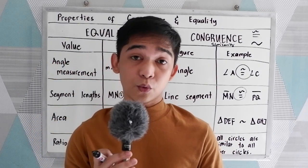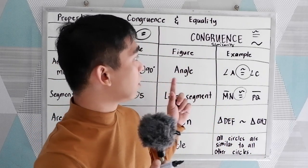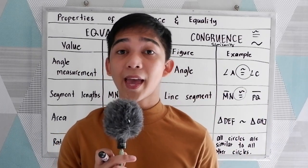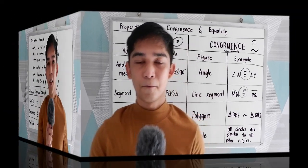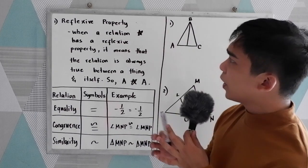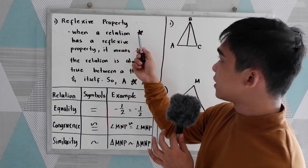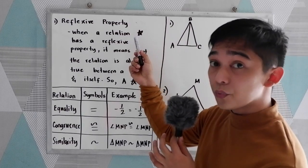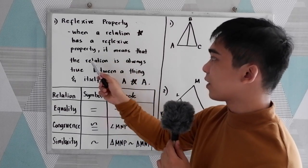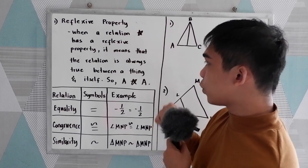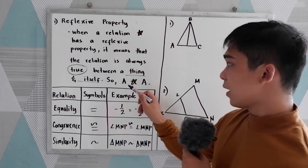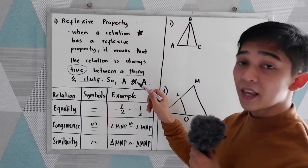So those are the differences between equality, congruence, and similarity. Now let us proceed to the different properties of congruence and equality. Our first property is the reflexive property. When a relation — represented by a star symbol for an unknown relation — has a reflexive property, it means that the relation is always true between a thing and itself. So A has an unknown relation to A.